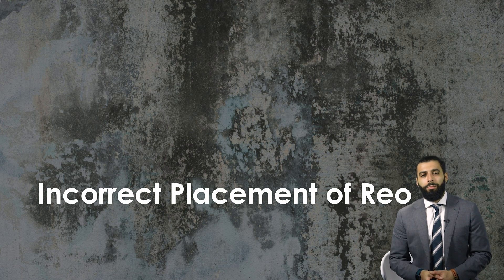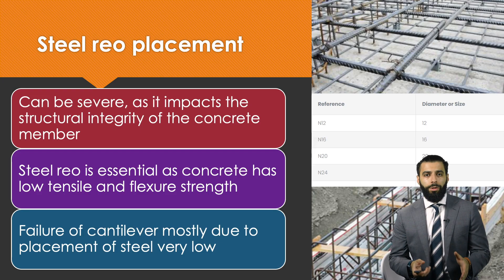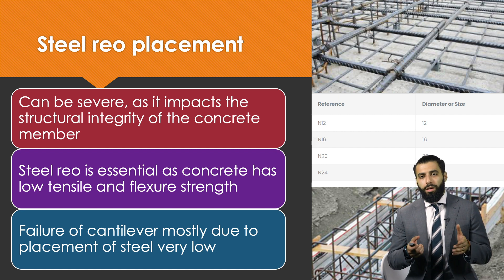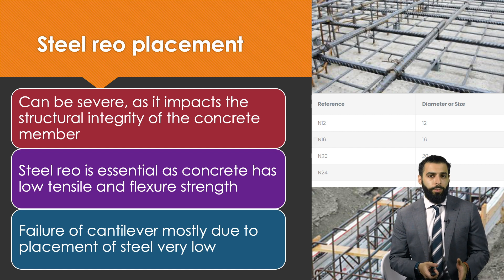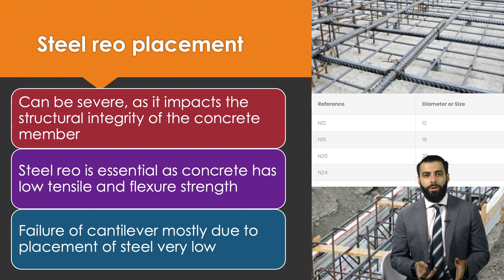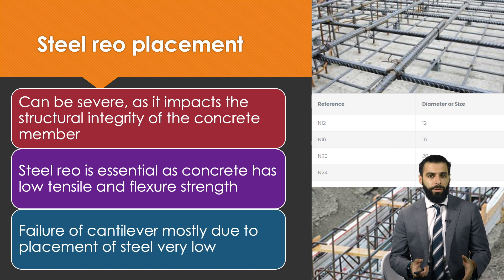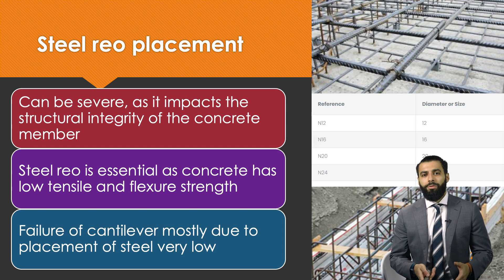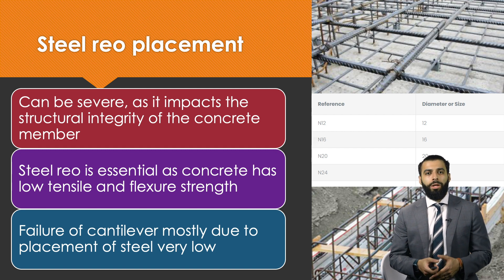The incorrect placement of steel reinforcement in concrete members is another common construction defect. The whole point of having steel reinforcement is to increase tensile strength — concrete is strong in compression but weak in tension, and we add steel reinforcement to overcome that weakness. If the steel is placed incorrectly, it can impact the tensile strength and cause issues with flexural strength. For example, balconies — which are cantilevers — fail largely because the steel reinforcement was placed too low. In reality, the top part of the concrete member must also be reinforced to handle the tensile stresses exerted on the cantilever.